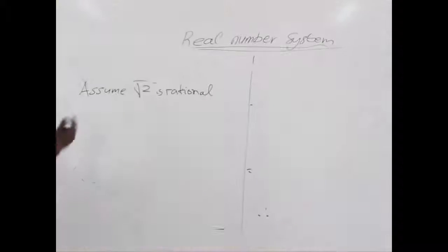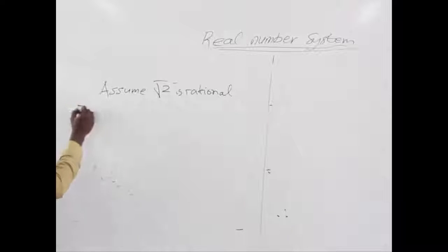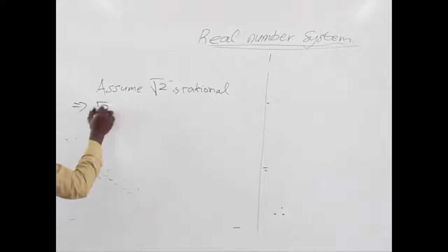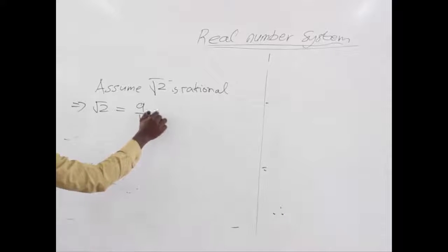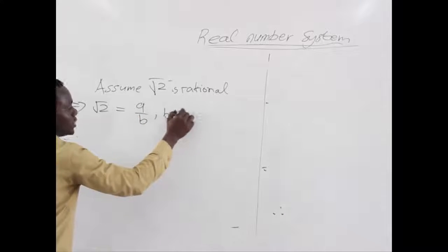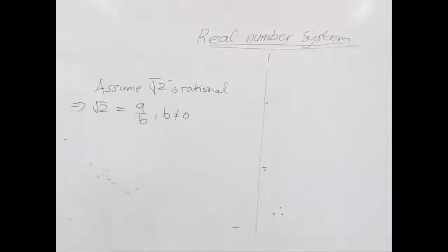Let's assume the truth is rational. It simply means the truth can be written in the form of a over b, where b is not equal to 0 and a and b are in their lowest terms.